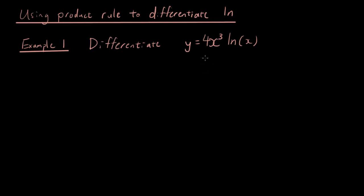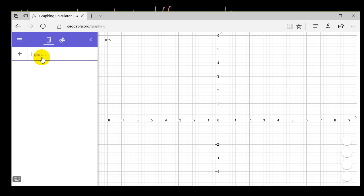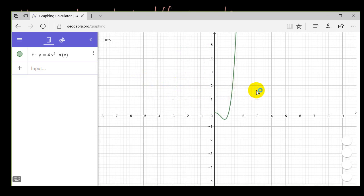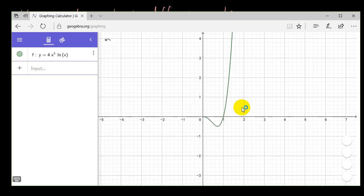We want to differentiate this function y equals 4x cubed times ln x. Now before we do this, let's just type it into GeoGebra and see what the answer is. So the graph is y equals 4x cubed times ln x. There is our line and what we want to do is we want to try and differentiate this line.